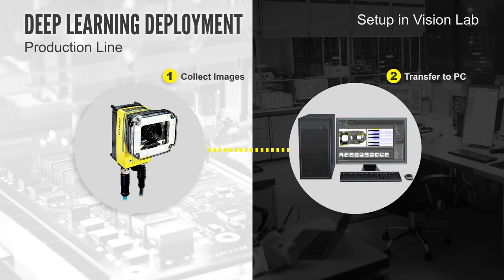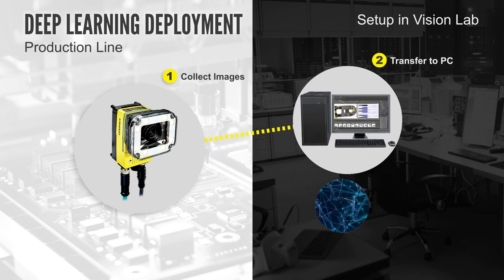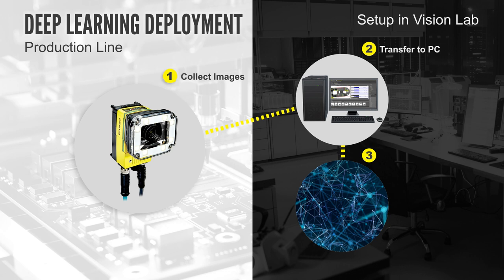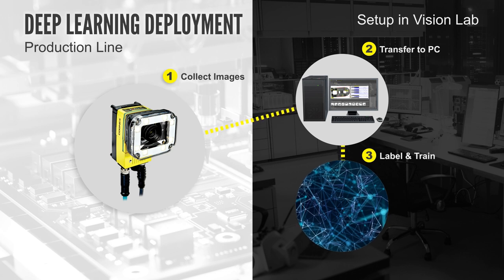Typically that computer is not on the production line but, for example, in a vision lab. The customer needs to label these images and train a deep learning model. As you can imagine, that is where most of the time and effort is spent — typically we are talking about hundreds if not thousands of images to label, and of course long training times.